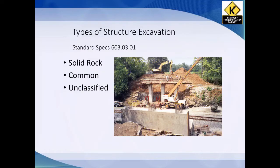Different types of structure excavation. Solid rock is anything that has to be ho-rammed or removed by blasting on a bridge — mainly ho-ramming — and can't be removed by normal means with a track hoe or dozer just by scraping. Common excavation is anything other than that, anything that can be removed with a track hoe or dozer. Unclassified means we're lumping it all together — we haven't done any Geotech or aren't real sure, so we're just saying it's unclassified. Contractor bids accordingly; you need to remove this material.